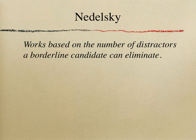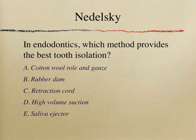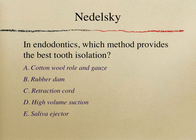I'll start with the Nedelsky method of standard setting. This method is essentially based on the number of distractors a borderline candidate can eliminate. I'll explain that with an example. Imagine you have a single best answer or multiple choice question: 'In endodontics, which method provides the best tooth isolation?' You have to put yourself in the shoes of a borderline candidate — just minimally competent — and look at the five distractors to see how many they can eliminate with 100% certainty.